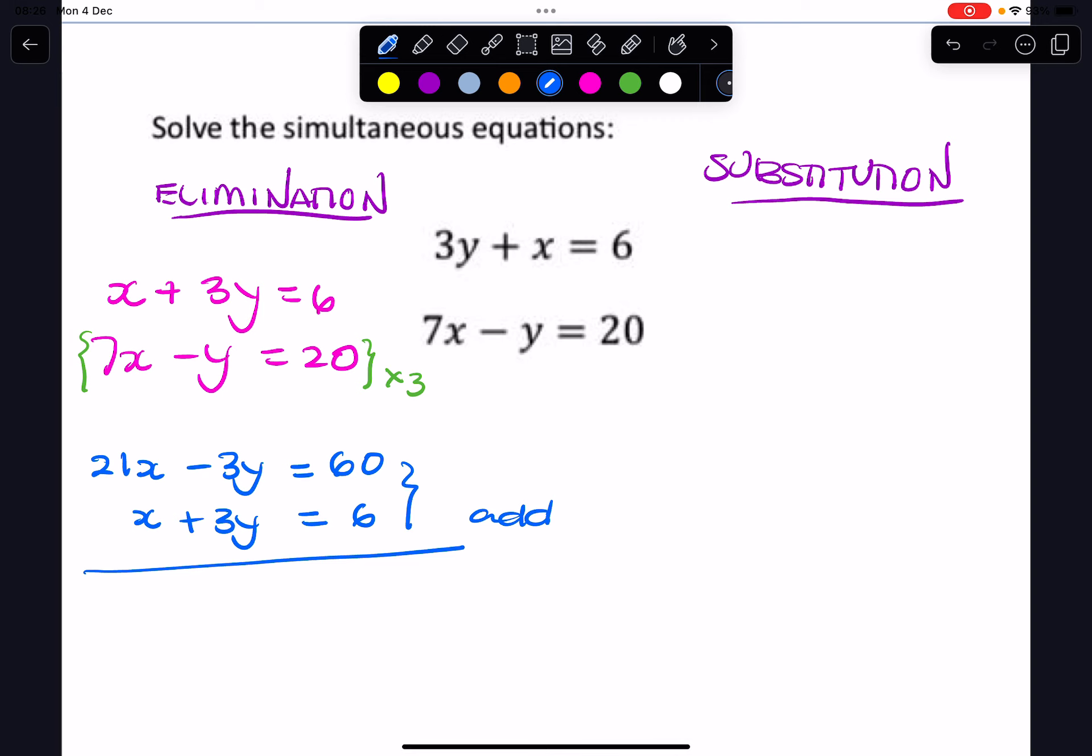These two together. So 60 and 6, that's 66, and then minus 3y and 3y, that's going to give me zero, and 21x plus x is 22x.